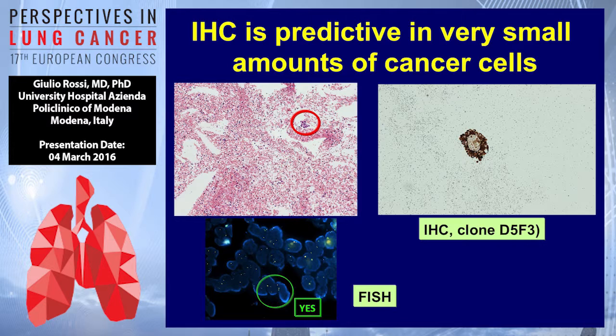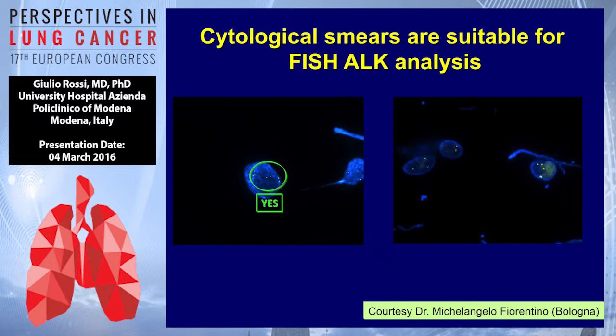I prefer immunohistochemistry for ALK, particularly with small amounts of cancer cells, like in a cell block where we have just a small cluster of neoplastic cells — this is ideal for immunohistochemistry, not for FISH analysis. But if I have only cytologic smears, I prefer FISH rather than immunohistochemistry. The right choice of technique depends on the tumor tissue available.